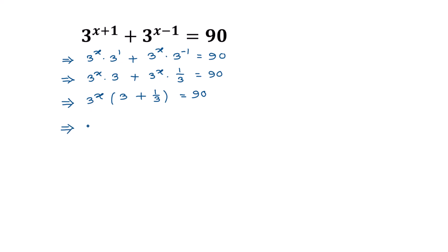Inside the bracket, 3 times 3 is 9, and 3 divided by 3 is 1, so we get 9 plus 1 which equals 10. Therefore the expression becomes 3 to the power x times 10 over 3, equal to 90.